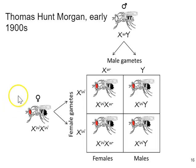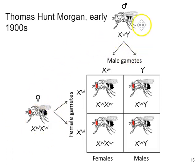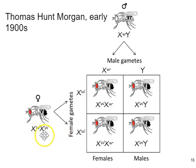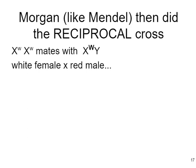A reciprocal cross means you switch the phenotype of interest and how it's assigned to biological sex. The original cross was red-eyed females versus white-eyed males. In the reciprocal cross, you would have red-eyed males versus white-eyed females. When he did that, he saw something very different, because the red-eyed males produce gametes X big W and Y, while the white-eyed females (recessive) are X little w, X little w and only make X little w gametes. So you would see a different pattern in the outcome — see if you can work that pattern and bring it to class.